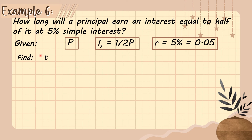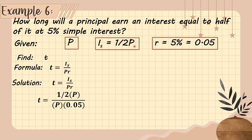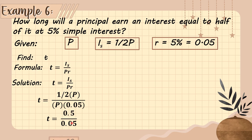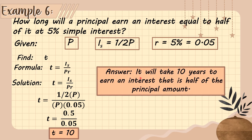The formula is t = I_s ÷ (P × r). Substituting: t = (1/2 × P) ÷ (P × 0.05). Since P appears in both numerator and denominator, it cancels out, leaving 0.5 ÷ 0.05 = 10. So the time is 10 years — it will take 10 years to earn an interest equal to half of the principal.